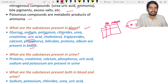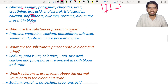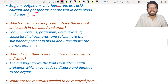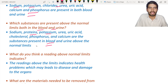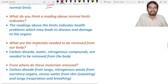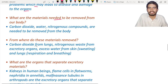Substances present in the urine include proteins, creatinine, calcium, phosphorus, uric acid, and potassium. Substances present in both blood and urine include sodium, potassium, and chlorine. Readings above normal limits in blood and urine indicate a health problem that may lead to disease and damage to organs.